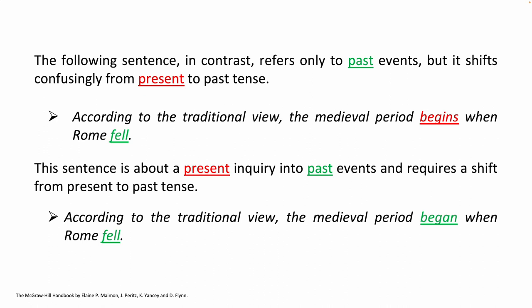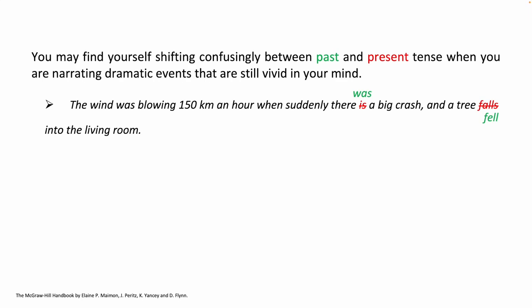According to the traditional view, the medieval period began — past tense — when Rome fell — past tense. You may find yourself shifting confusingly between past and present tense when narrating dramatic events that are still vivid in your mind. Like in this example: 'The wind was blowing 150 km an hour when suddenly there is a big crash and a tree falls into the living room.' The main verb tense used is past continuous. So be consistent: 'Was blowing 150 km an hour when suddenly there was a big crash and a tree fell into the living room.'